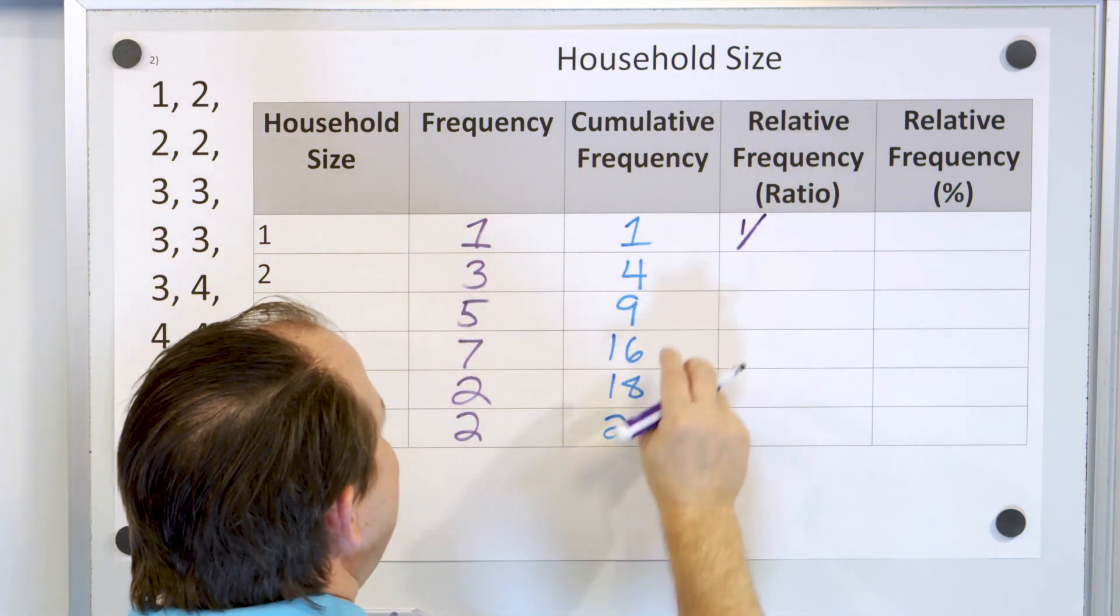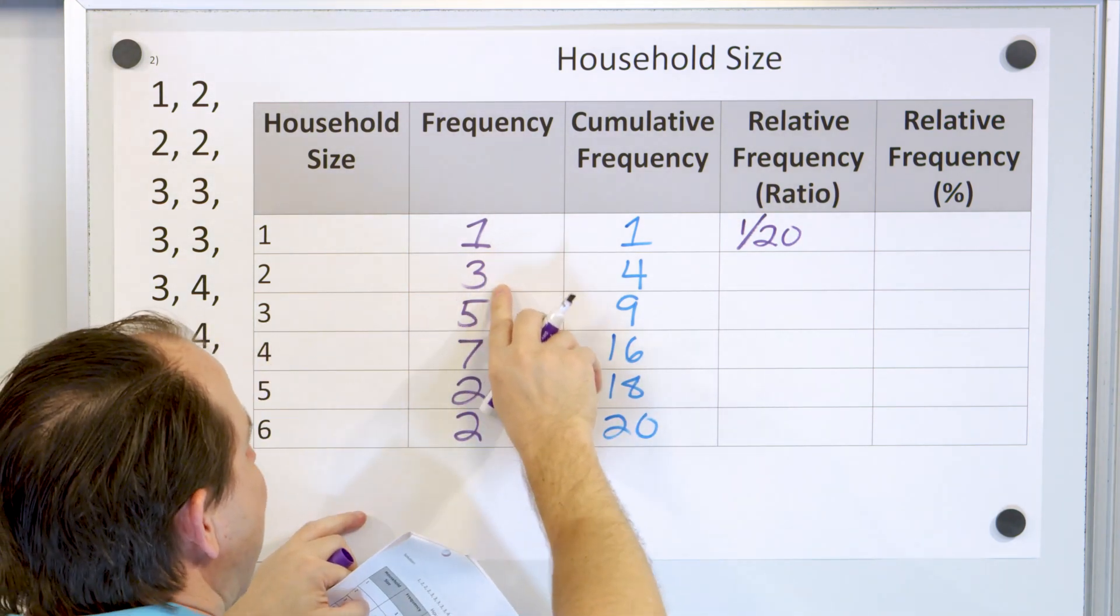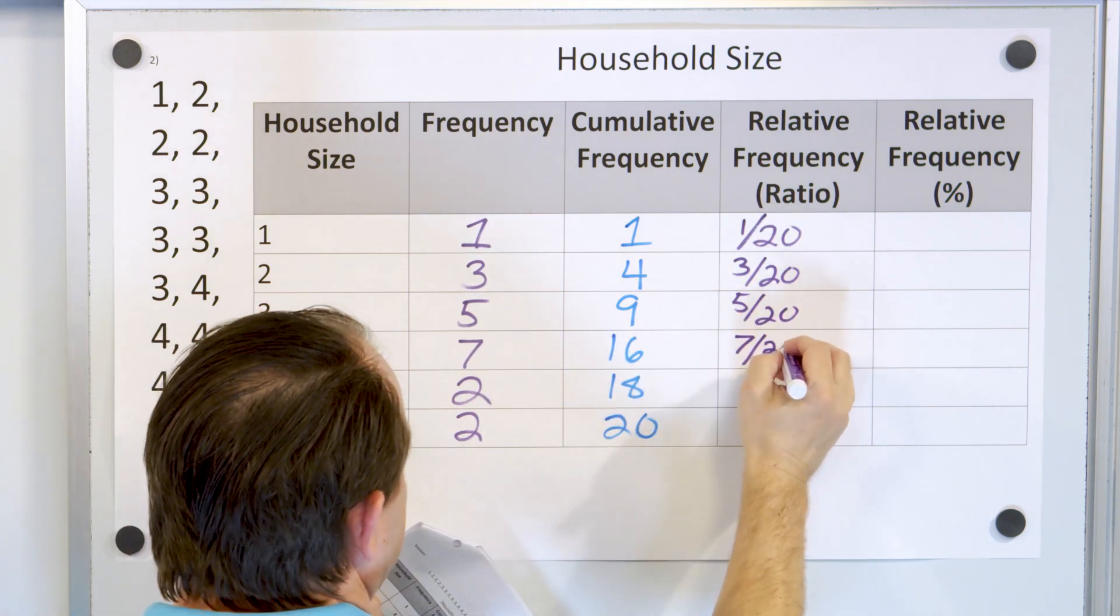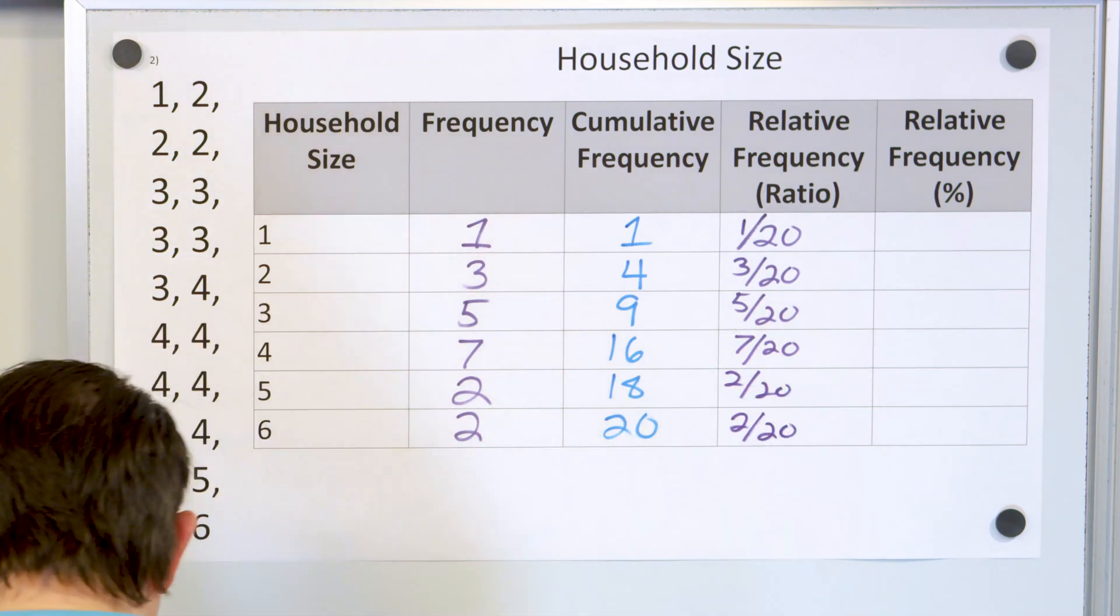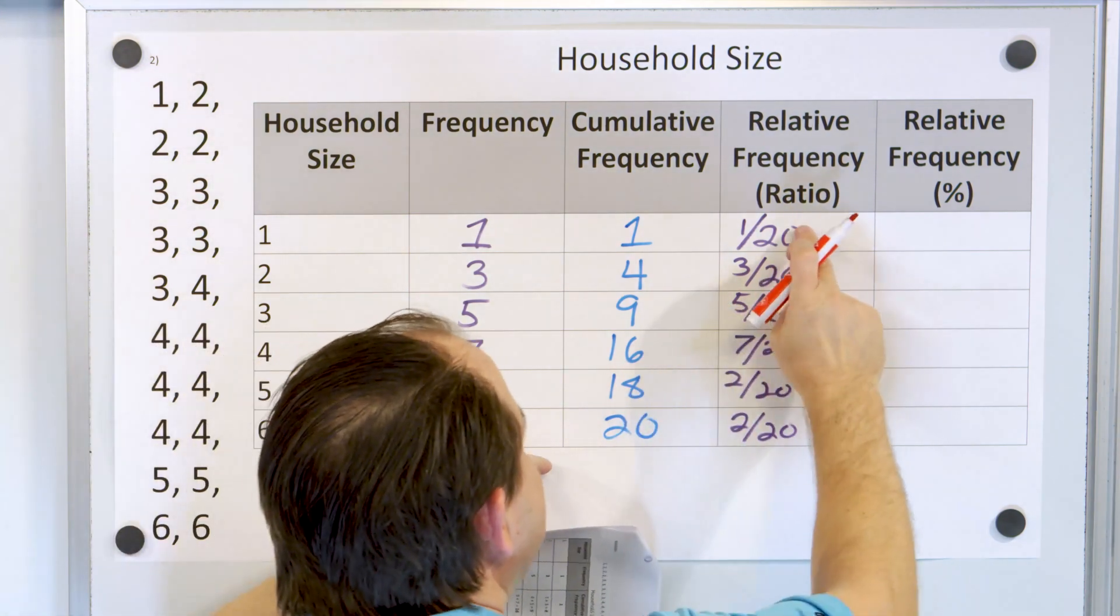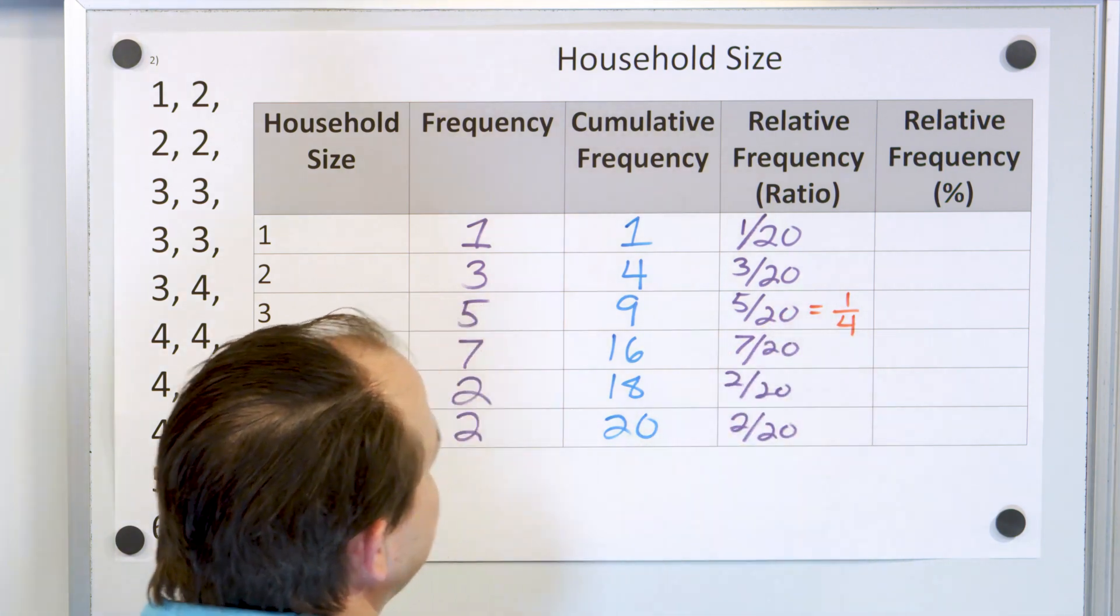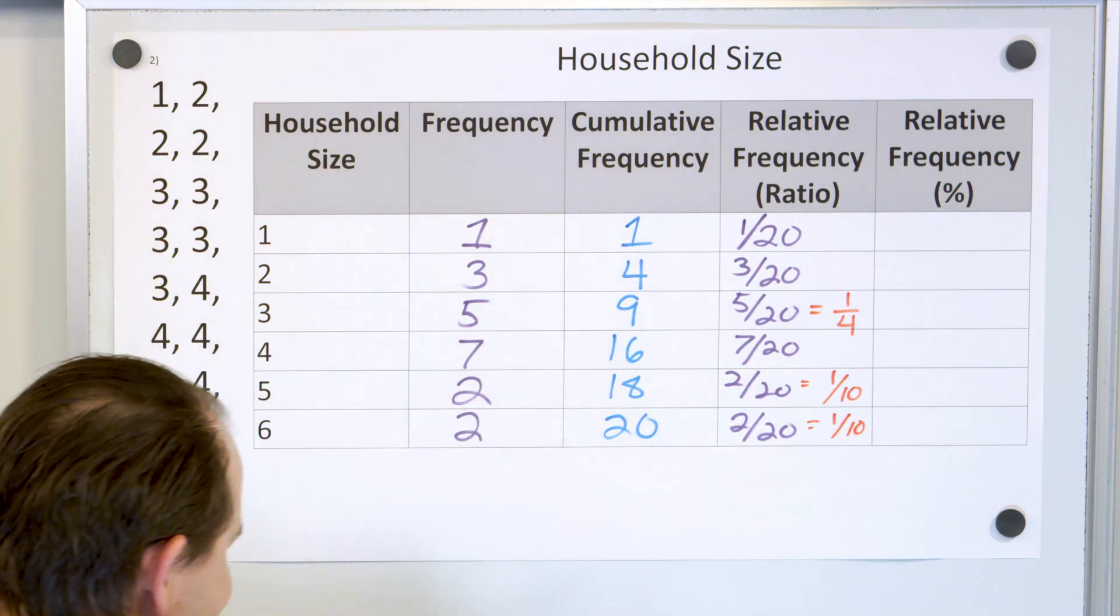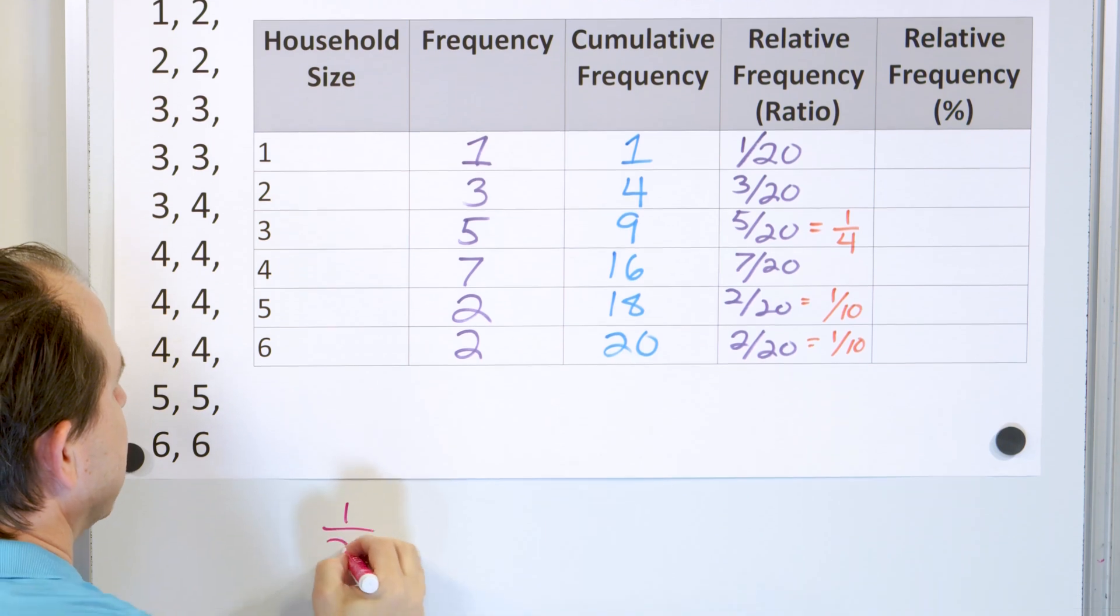Now the next step is to write down the relative frequency. That's how many responded in this way compared to the total amount of respondents. So one person answered this out of a total of 20, that's the ratio 1 20th right. Here are three people answered this way out of again 20, is always going to be out of 20. Here's 5 out of 20, here's 7 out of 20, here's 2 out of 20 and here's 2 out of 20. Now we can leave it like that or we can simplify these fractions like we always should. Now these can't be simplified but 5 20ths can work out to be 1 4th because you can divide by 5, divide by 5 and you get 1 4th. This you can't simplify, here you can divide by 2 and you will get 1 10th and you will get 1 10th. So you really should write down the simplified fraction if you can.